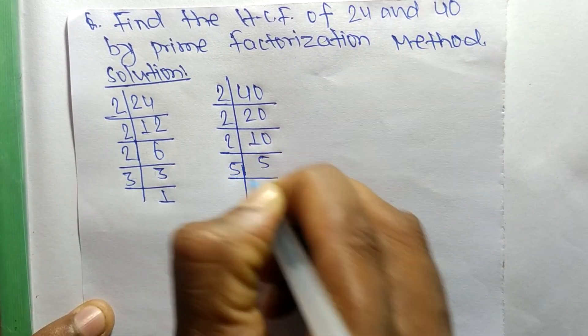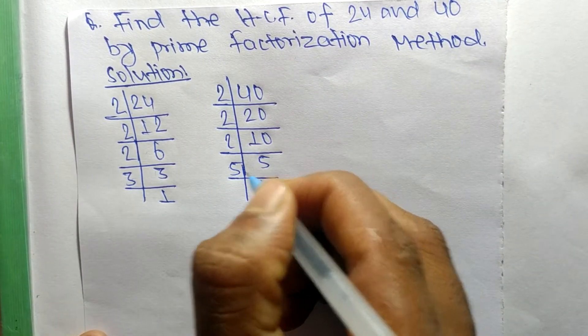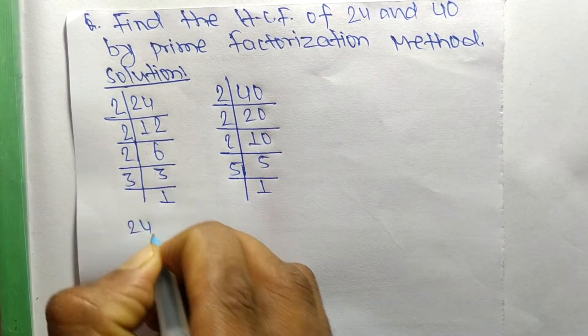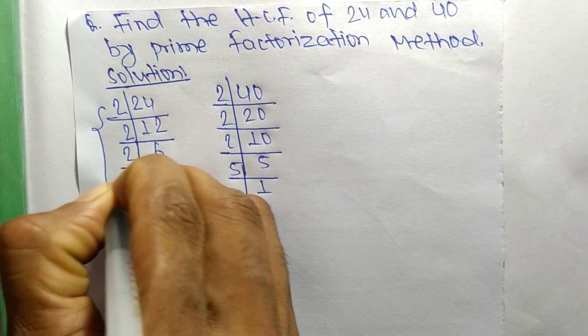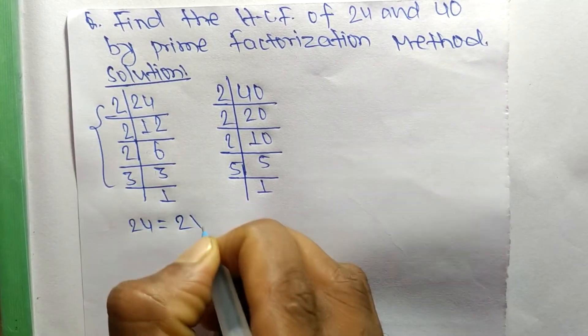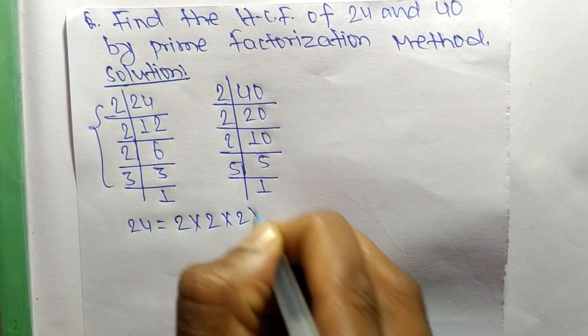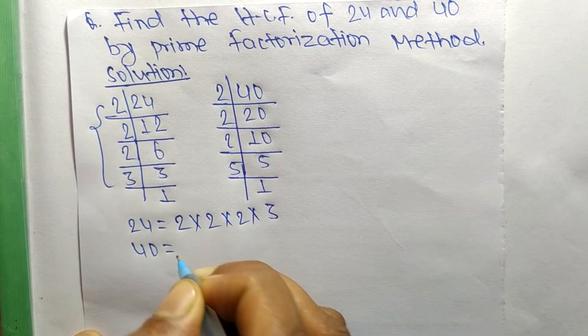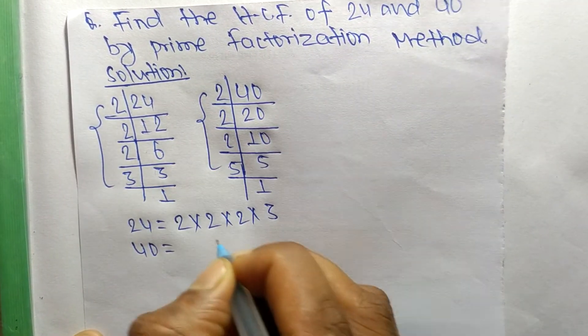So from these prime factors we can write: 24 is equal to 2 times 2 times 2 times 3. Likewise, 40 is equal to 2 times 2 times 2 times 5.